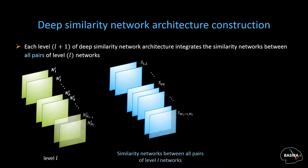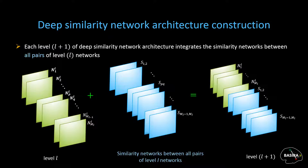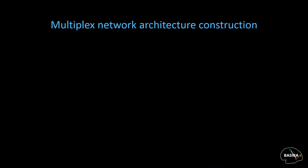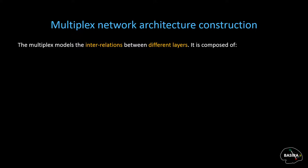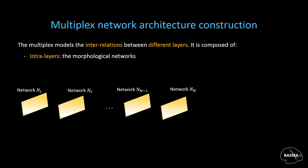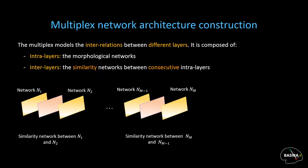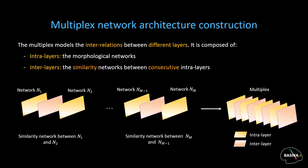By adding the similarity networks to our basic networks in level L, we construct level L+1 networks, and so on. To enforce a more structured design, we propose to use a multiplex network to model the interrelations between different layers in a generic way. We define a brain multiplex M as a set of M intralayers, or morphological networks, where between two consecutive layers NI and NJ we slide an interlayer SIJ. This produces a multiplex architecture composed of a set of intralayers and interlayers, where the key ingredient is the similarity interlayer network capturing the relationship between two networks.